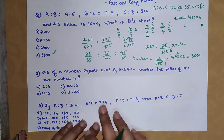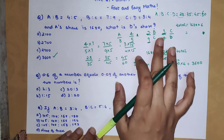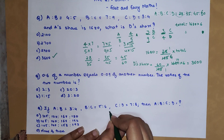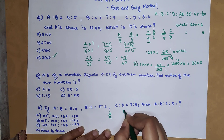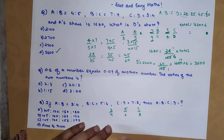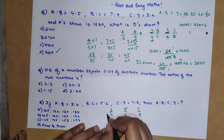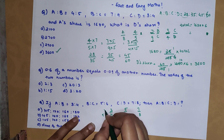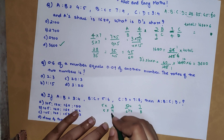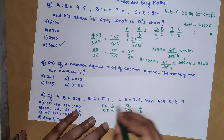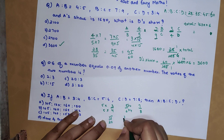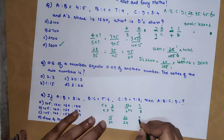For a quick revision, let's do another similar problem. We have A upon B as 3 upon 4, B upon C as 5 upon 6, and C upon D as 7 upon 8. This is slightly different. To convert, we multiply the first fraction by 5 and the second fraction by 4, giving 15 upon 20 and 20 upon 24.